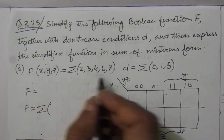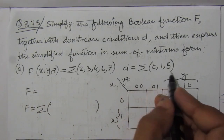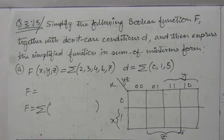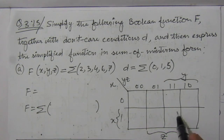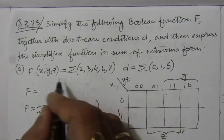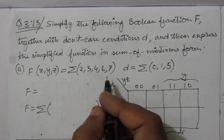This is the function given and these are the don't care conditions. The characteristic of the don't care condition is that we can consider it to be either 0 or 1, depending on our consideration. It may be either 0 or 1. Now, let us solve the problem one by one and fill this map with the given function.